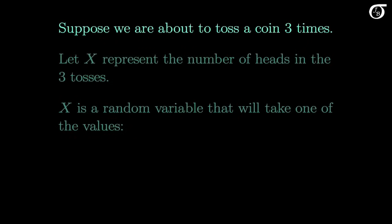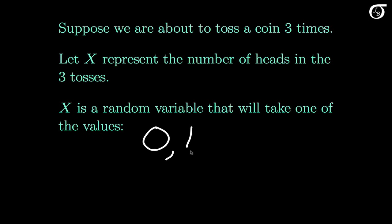Here's a simple example. Suppose we are about to toss a coin three times, and we let x represent the total number of heads in these three tosses. Then x is a random variable that will take on one of the values 0, 1, 2, or 3. x is a random variable because it is a quantitative variable whose value depends on chance — we don't know what value x will take on until we actually toss the three coins and count the number of heads.